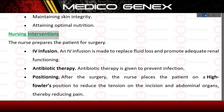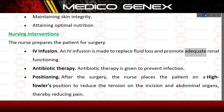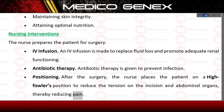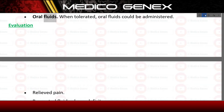Nursing interventions. The nurse prepares the patient for surgery. IV infusion is made to replace fluid loss and promote adequate renal functioning. Antibiotic therapy is given to prevent infection. Positioning after surgery: the nurse places the patient in a high Fowler's position to reduce tension on the incision and abdominal organs, thereby reducing pain. When tolerated, oral fluids could be administered.